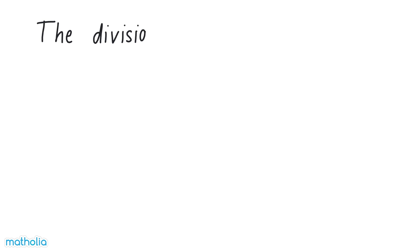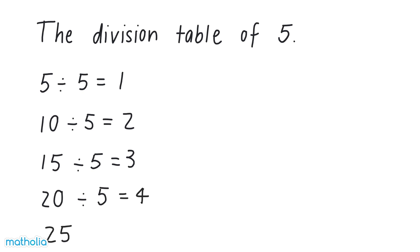Let's complete the division table of five. Five divided by five equals one. Ten divided by five equals two. Fifteen divided by five equals three. Twenty divided by five equals four. Twenty-five divided by five equals five.